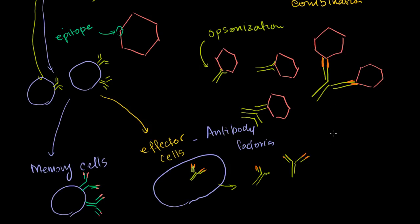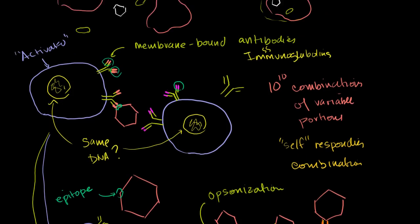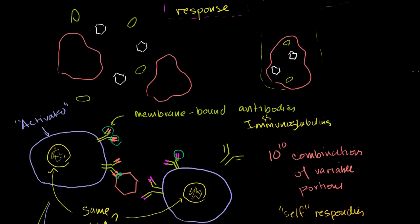We'll talk more about B cells in the future. I find it fascinating that there are that many combinations — enough to recognize almost anything that can exist in the fluids of our body. But we haven't solved all the problems yet: what happens when pathogens actually infiltrate cells, or when we have cancer cells? How do we kill cells that have clearly gone astray? That's where T cells come in.